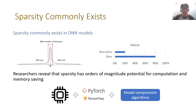Fortunately, many algorithm works show that sparsity commonly exists in DNN models. For example, there can be more than 80% zeros in the VGG model without losing accuracy. Leveraging such sparsity can achieve orders of magnitude potential computation and memory saving.